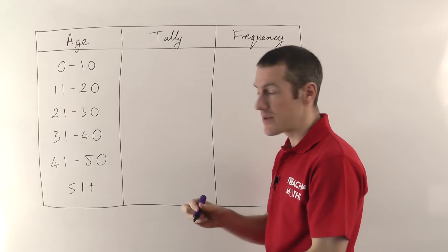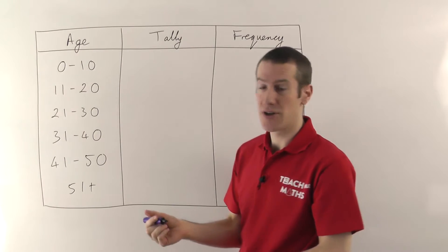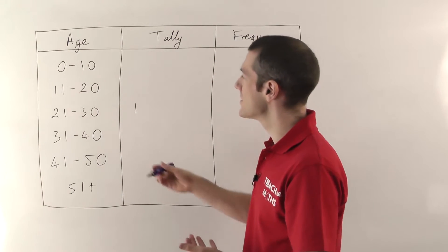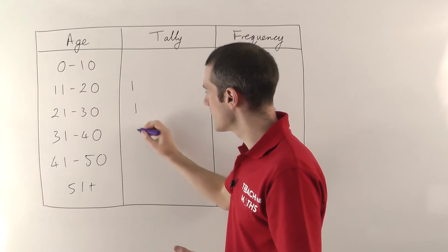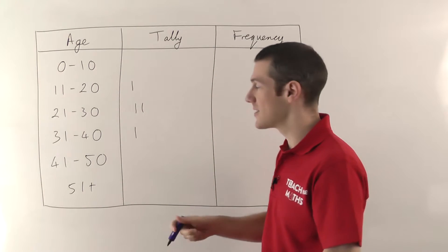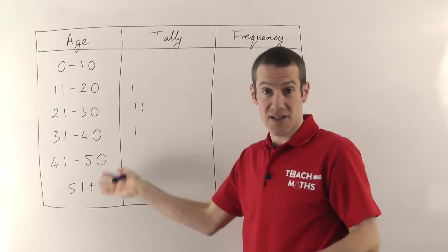So you look at your first question there. Maybe the first person ticked 21 to 30, so you put a little tally mark in that row. Maybe the next person ticks 11 to 20 and then 31 to 40, and then 21 to 30 again. You keep going through all your questionnaires putting tally marks for every person who ticks an appropriate box.